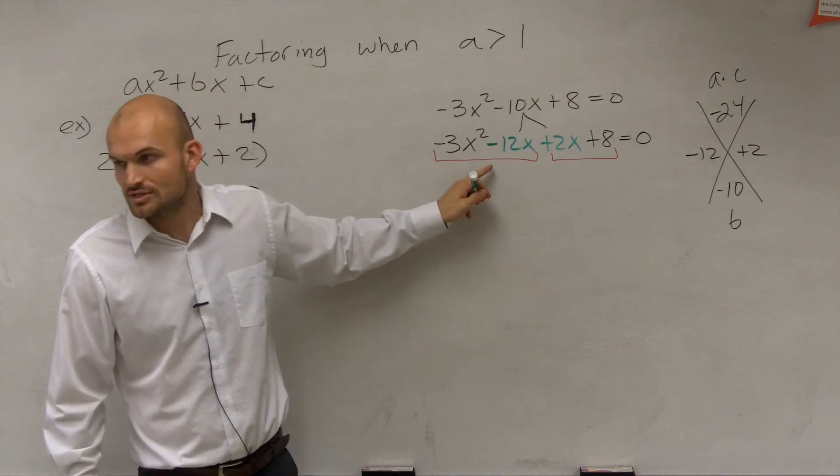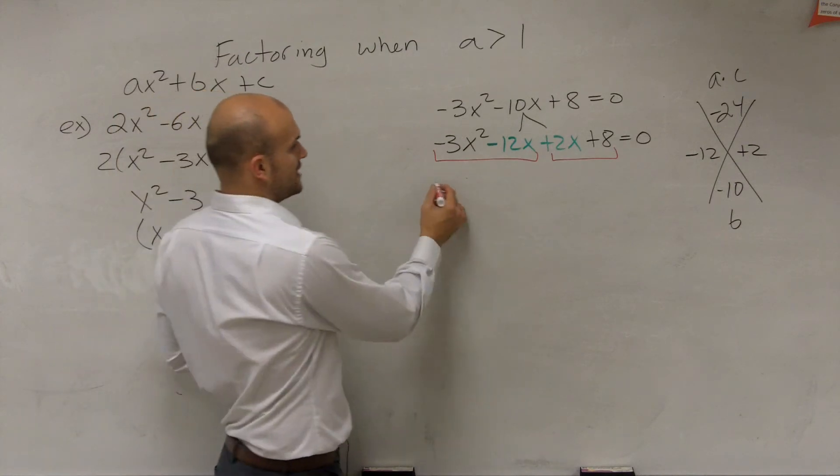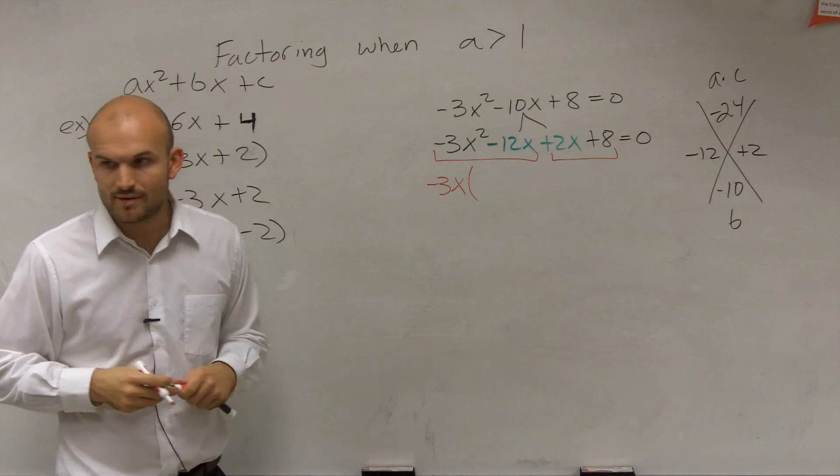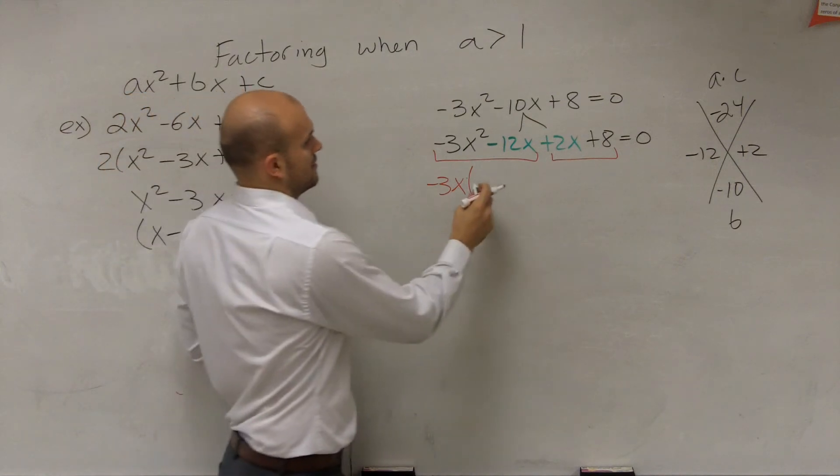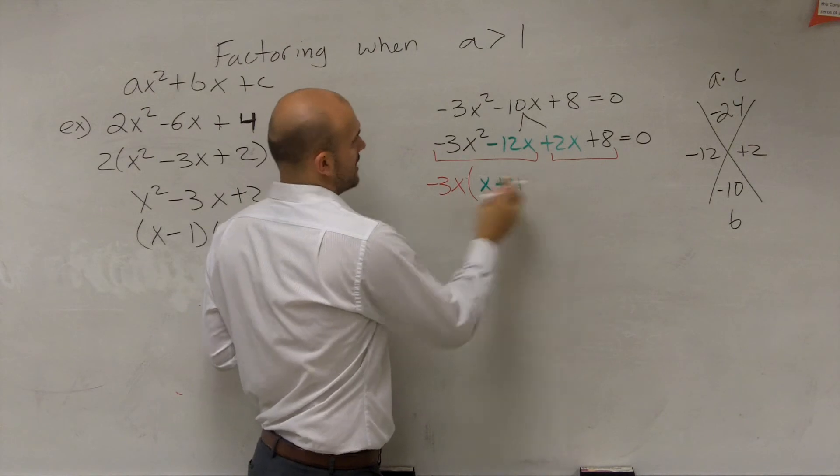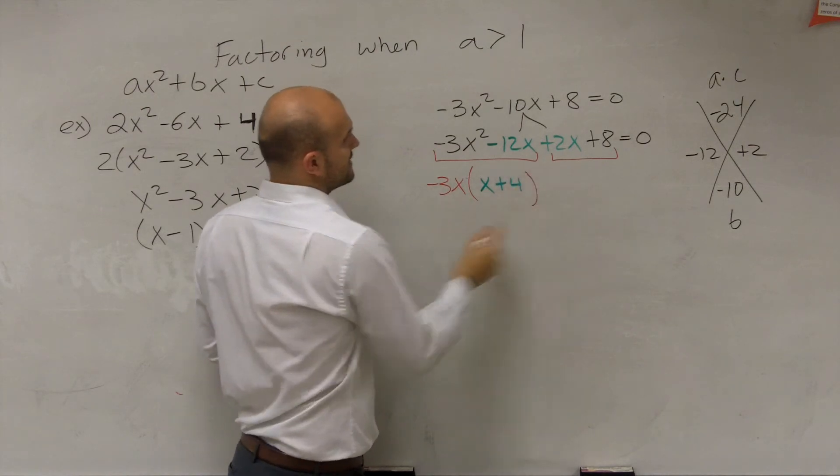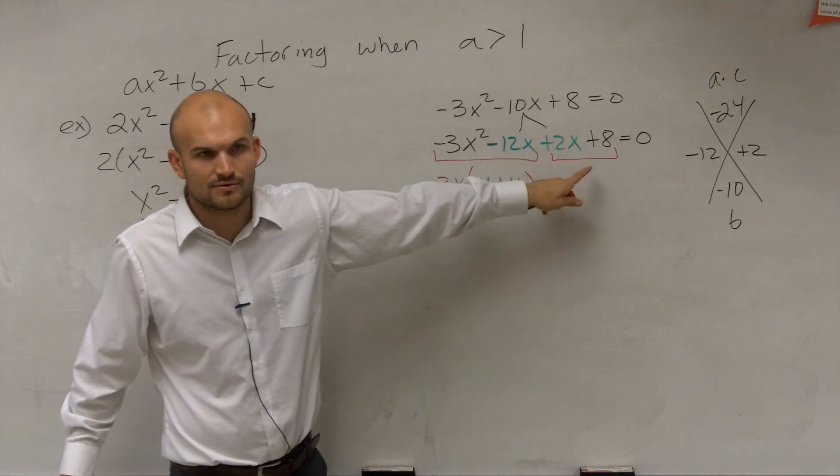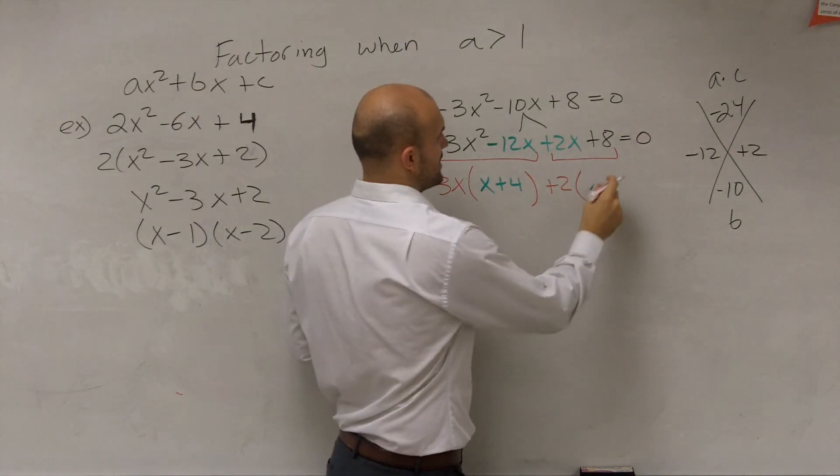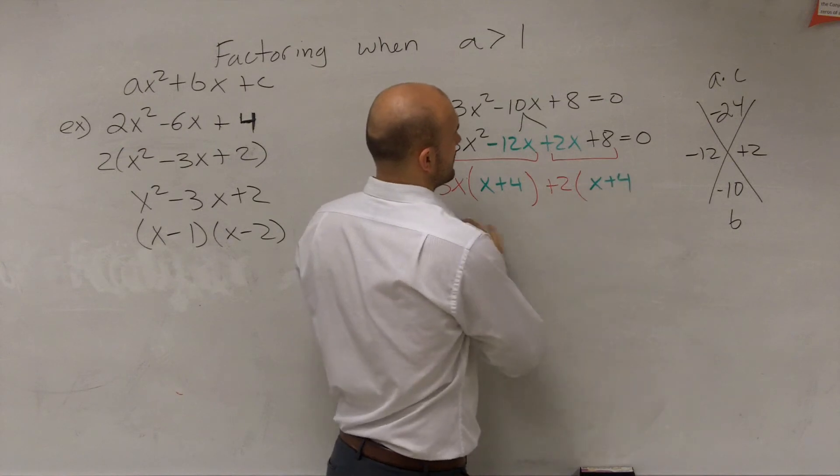What's the GCF of these two? -3x. When I factor out -3x, I'm left with (x + 4). Can I factor out the GCF from these two? Yes, a 2. When I factor out the 2, I'm left with (x + 4).